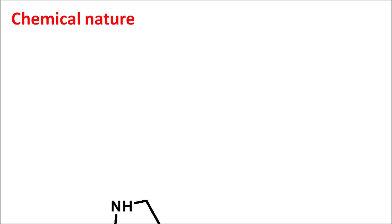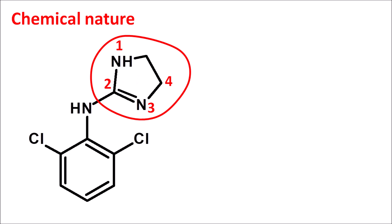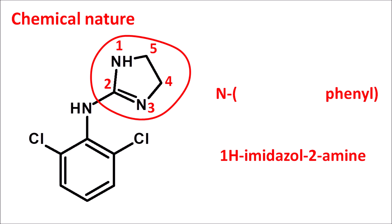Now let us look at the chemical nature of this drug. The structure of Clonidine contains a heterocyclic ring system — imidazoline — which is partially saturated. This imidazoline is attached with an amine group at the second position, written as 1H-imidazol-2-amine. On the nitrogen of the amine, a phenyl ring is attached (N-phenyl), and to this phenyl, chlorine groups are attached at the second and sixth positions — 2,6-dichloro. So Clonidine is a 2,6-dichlorophenyl-substituted imidazoline derivative with saturation at the 4 and 5 positions (4,5-dihydro).